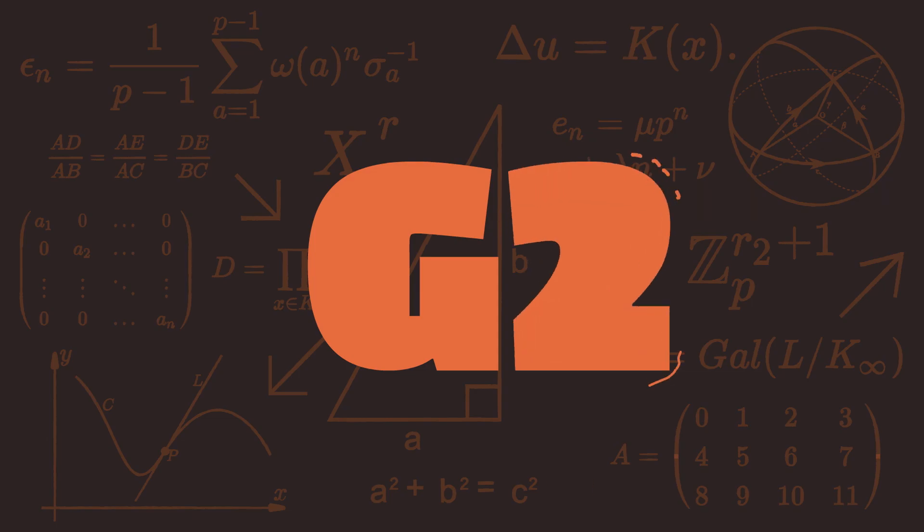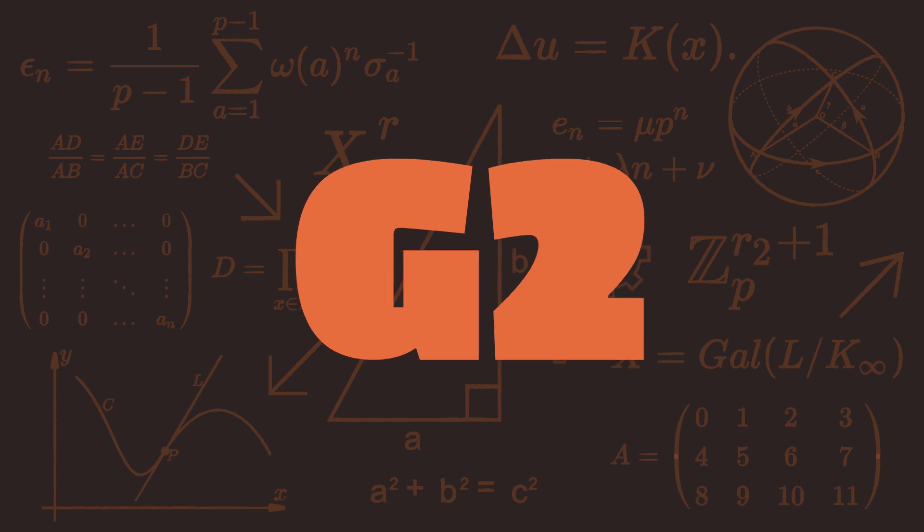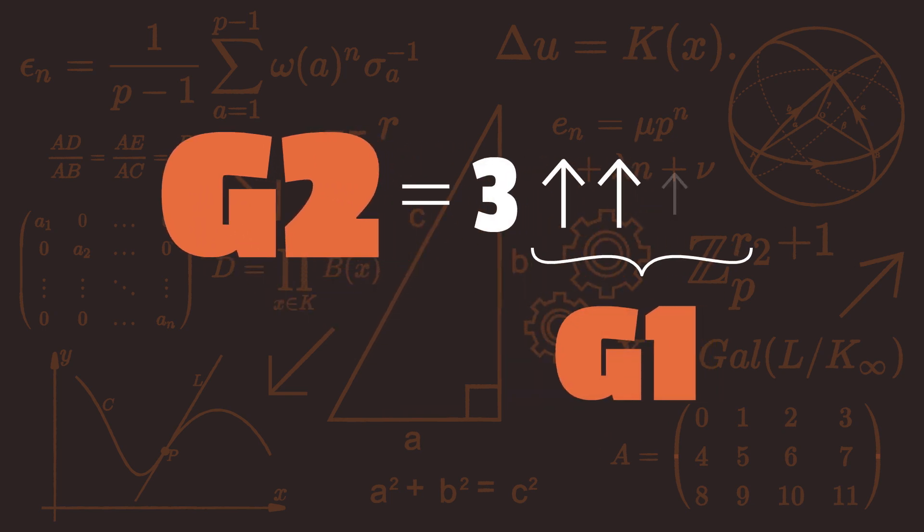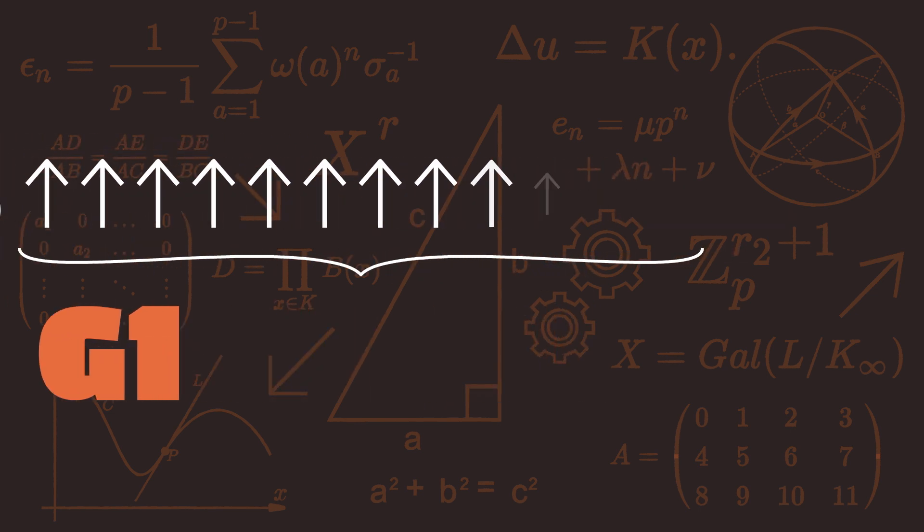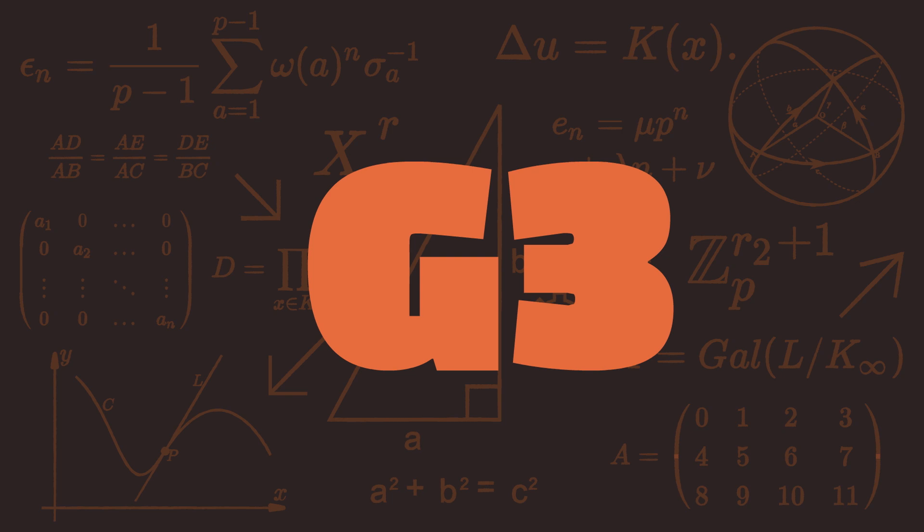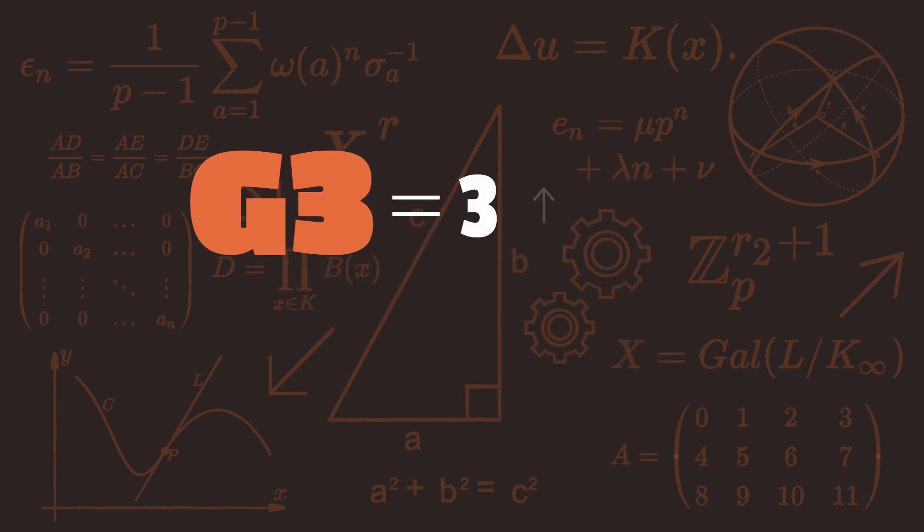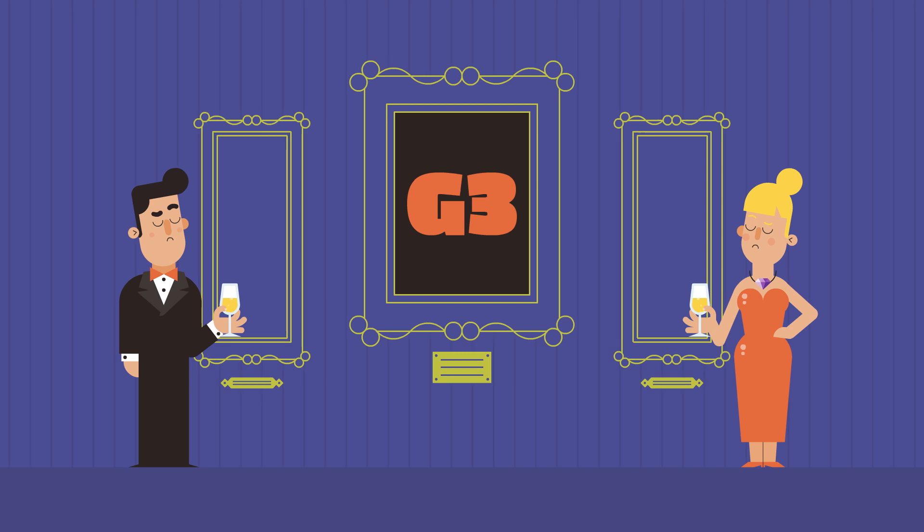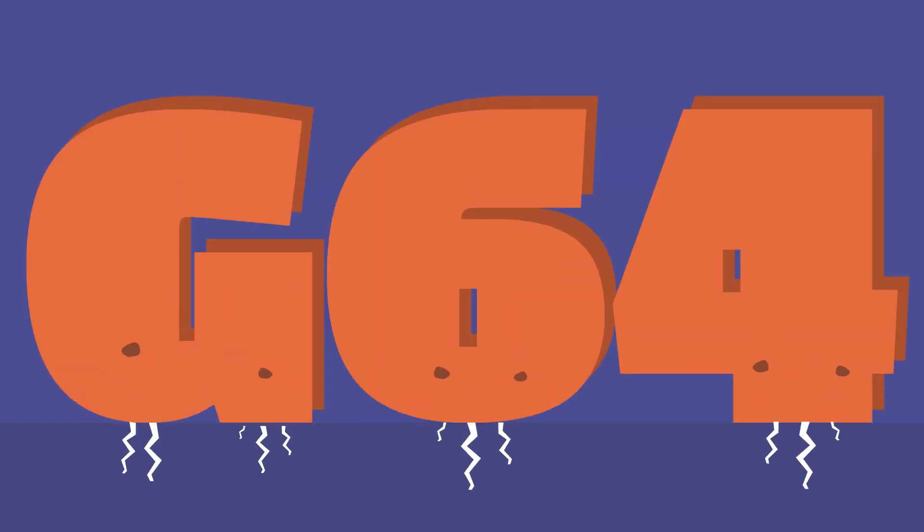But let's write G2 as the same number but this time with G1 arrows. Yes, we can't even imagine the number of arrows. G3 will also be the same: 3 then G2 arrows then 3, and so forth until we get to G64.